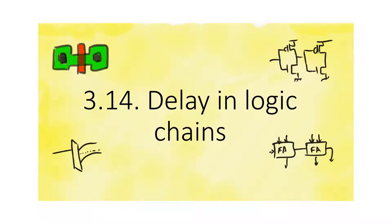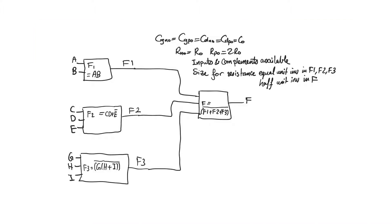Let's consider a more complicated gate and see how we can size transistors for delay. This gate consists of multiple independent CMOS gates connected together to implement a very complicated function f, partitioned into three components f1, f2, and f3, which are combined together in gate f through a three-input NOR. The givens are that cgn, cgp, cdn, and cdp are all equal to c-naught.